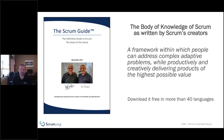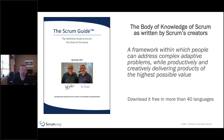Scrum's body of knowledge is written by its creators, Ken and Jeff. A new version came out in November 2017, and it's available at scrumguides.org, also linked from scrum.org's website. There is only one Scrum, as defined by those creators, and it's translated into over 40 languages for those who are not native English speakers.